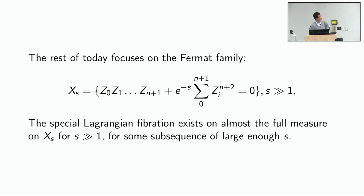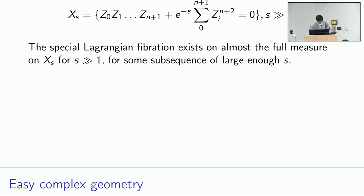The result for this explicit family is that the special Lagrangian fibration exists on almost the full measure — the larger you take the parameter S, the larger the subset on which it exists, and in the limit you get 100% of the measure on which the special Lagrangian exists.